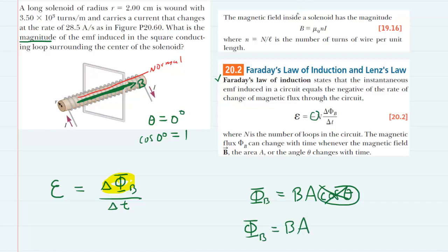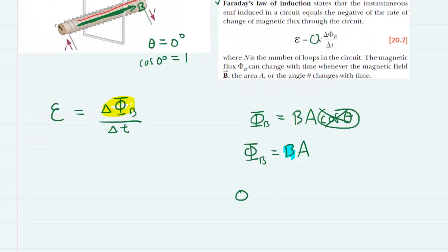Now for a solenoid, we learned in an earlier chapter that the magnetic field strength is equal to μ₀ multiplied by the number of turns per unit length, and then multiplied by the current. So what we're going to do is actually substitute this expression right here in for the magnetic field of the solenoid. So we have the magnetic flux of the solenoid equals the magnetic field which was μ₀ times lowercase n times i multiplied by the area of the solenoid.